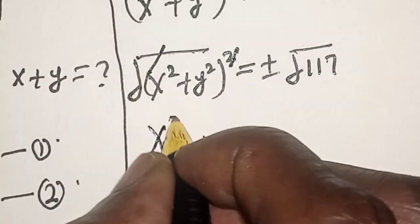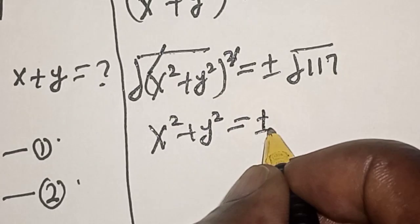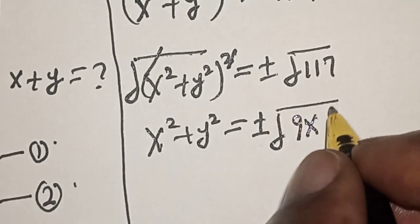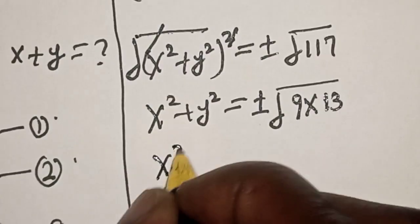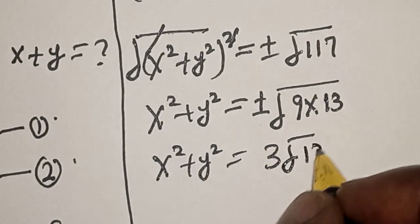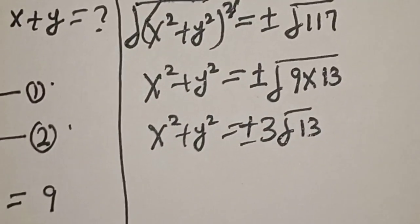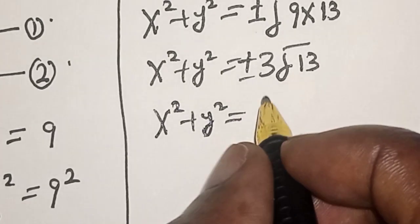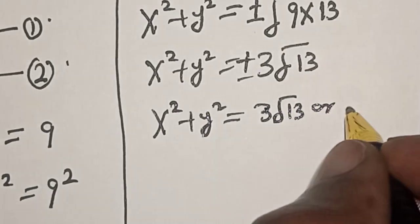Then we have x squared plus y squared is equal to plus or minus square root of 9 multiplied by 13, which gives x squared plus y squared is equal to plus or minus 3 root 13.